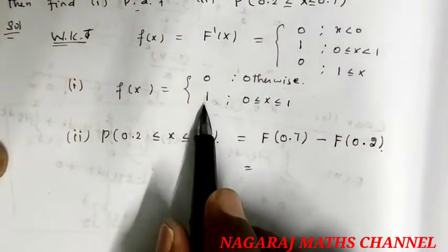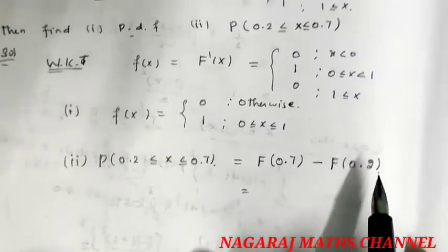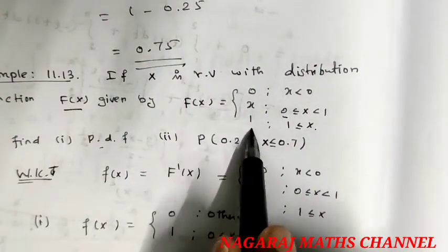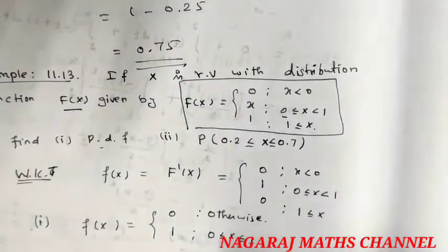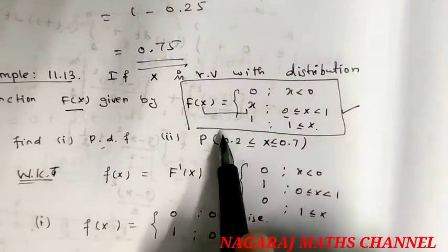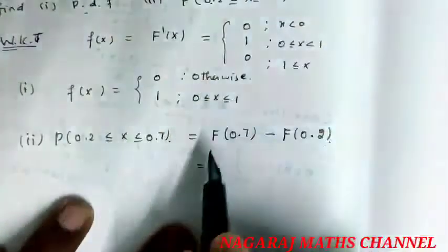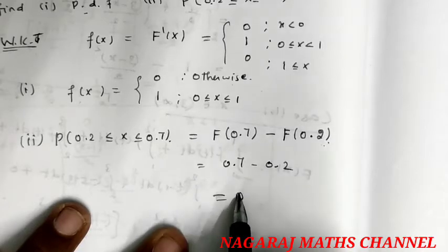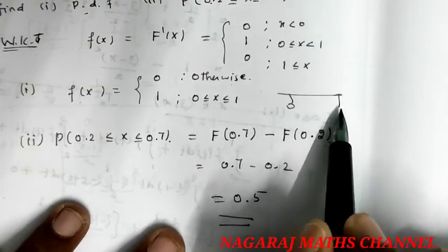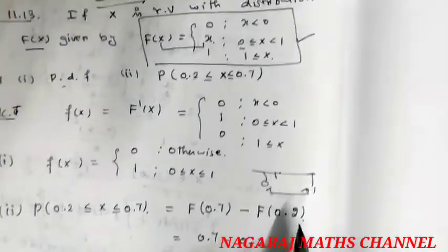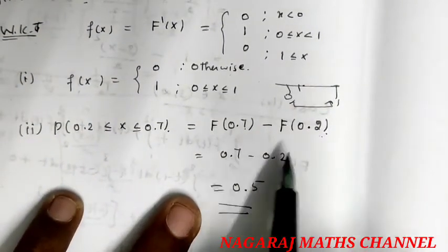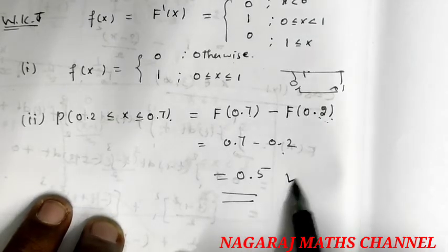This is F of 0.7 minus F of 0.2. F of 0.7, where x is equal to 0.7, so 0.7 minus 0.2 equals. Capital F of x at 0.7 is 0.7, at 0.2 is 0.2, so 2 minus 0.5.